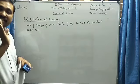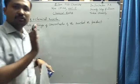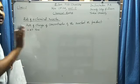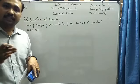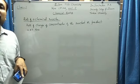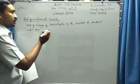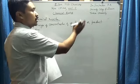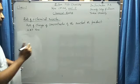When a chemical reaction takes place, what is changing with time? Either the concentration of the reactant is changing or the concentration of the product is changing. So we define the rate of a reaction in terms of the change in concentration of the reactant or change in concentration of the product with respect to time.